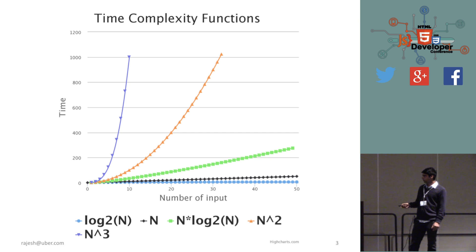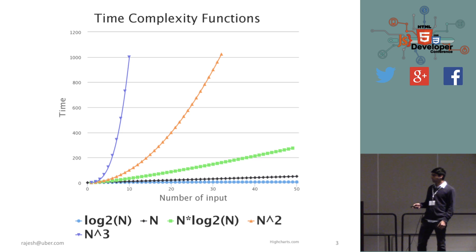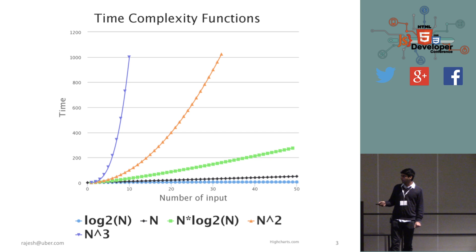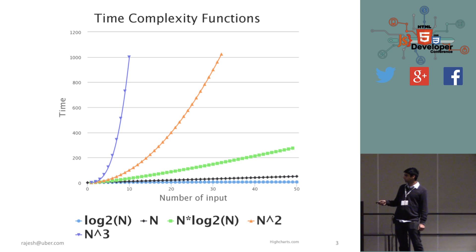The next function is n. The x-axis is the number of inputs — how many data elements you have — and y is the time it takes to process that input. I've plotted up to 50. Log n for 50 is around 6. For n, it equals 50. We also have n log n, growing at a faster pace. And n-squared is going at a much faster rate.